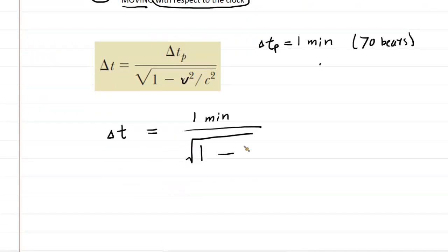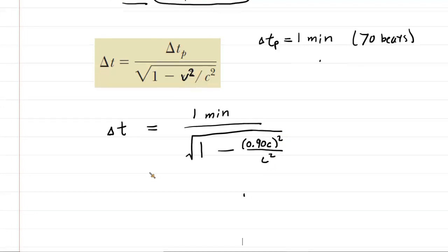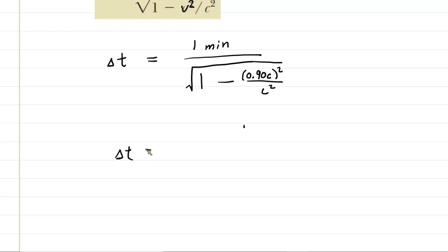So what you do is you go 0.90 times c, and then you square that entire quantity as dictated by the equation. And then you divide that by the speed of light squared. Now there's a nice calculational simplification that we can do here. So the numerator will remain that one minute time interval. And then in the denominator, what you're going to want to do is square 0.9. And when you square 0.9, you're going to get 0.81.